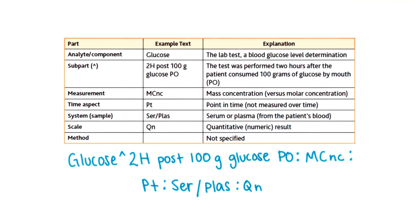LOINC was developed and is maintained by the Regenstrife Institute in Indiana, but is used virtually worldwide. Each code is for a laboratory test or a clinical observation and is a number with up to seven digits.